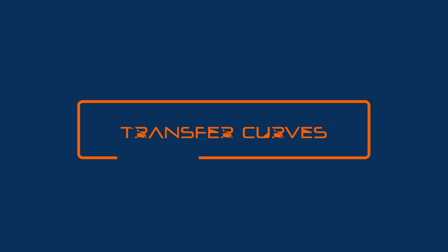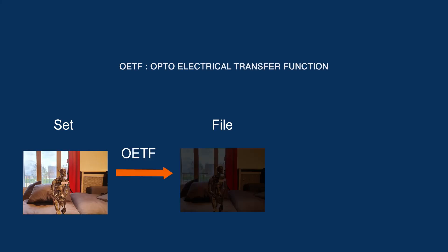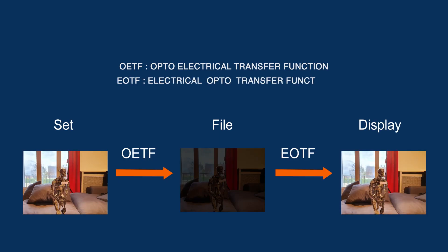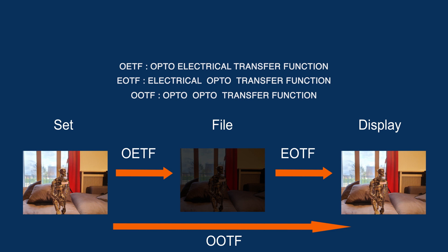We're going to talk about the transfer curve. To record an image, we convert light into computer data using an OETF curve — Opto-Electrical Transfer Function. This picture as itself cannot be displayed on a screen; to display it, a reverse curve needs to be applied — an EOTF curve, Electrical Opto Transfer Function. The whole process from shooting to display on a screen is called Opto-Opto Transfer Function, or OOTF.